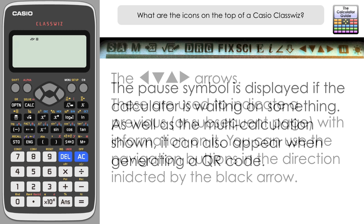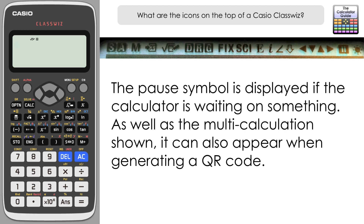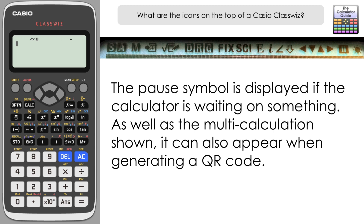The pause symbol indicates that the calculator is waiting for a second part of a calculation. The best example is using the colon for multiple calculations — let's put in 5 plus 6, then colon, then 10 plus 12. Pressing equals calculates 5+6 = 11 first, and the pause symbol is activated showing the calculator is waiting for more. Pressing equals again completes 10+12, and the pause symbol disappears.